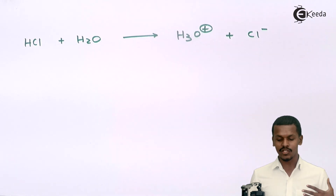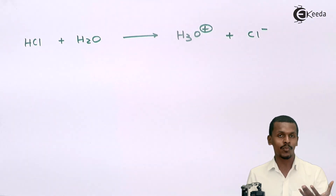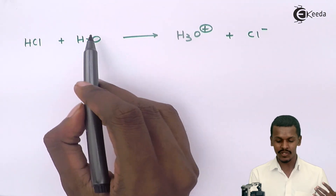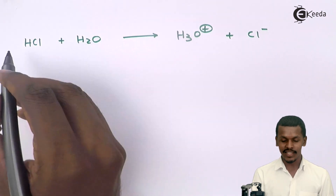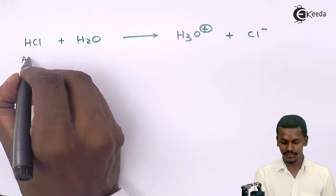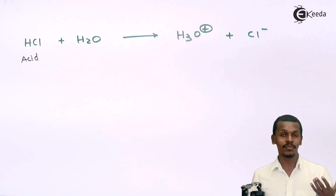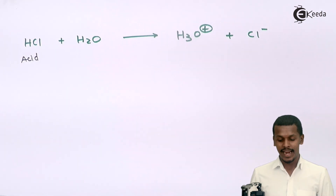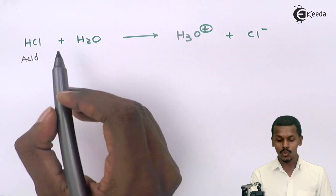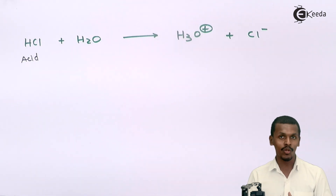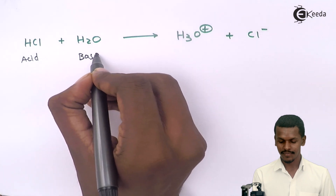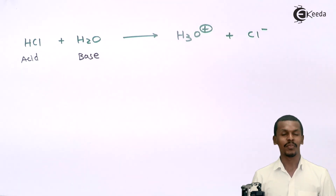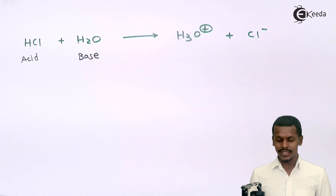Because HCl is the one that has donated its proton to H₂O, HCl is called an acid in terms of Lowry-Bronsted. And since H₂O is the one which accepted that proton, H₂O is called the base. So this is how we define acid and base.